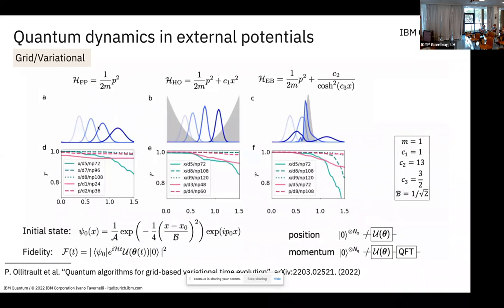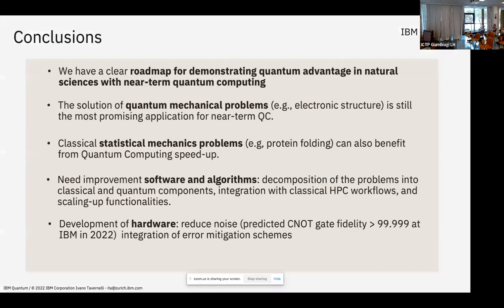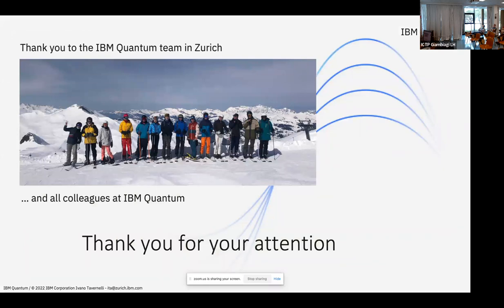I'm very happy to show this because I was working with classical methods on this kind of dynamics for many years and now I can do it also with the quantum computer. Test cases include dynamics in a harmonic potential and scattering of a wave packet against an Eckart barrier, where part of the wave packet tunnels across the barrier and part is reflected. Doing this classically is a nightmare, but now we have a stable algorithm that can do it using a polynomial number of resources. Thank you for your attention.